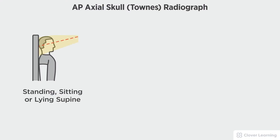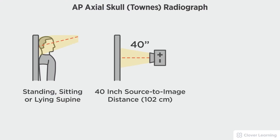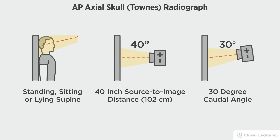In this view we will be demonstrating the AP Axial Skull Towne's view. The AP Axial Skull Towne's view should be performed with the patient standing or sitting at the upright bucky or lying supine on the table with a 40-inch source to image distance and a 30-degree caudal angulation.